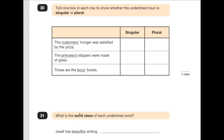Number 30 is asking you to show whether each example is singular or plural. They all use apostrophes. The trick with singular and plural apostrophe use for possession is that if you've got a plural, the apostrophe 9 times out of 10 goes at the end after the S. 'The customers' hunger was satisfied by the pizza' — apostrophe after the S, so that's plural. 'The princess's slippers were made of glass' — apostrophe S, so it's one princess — singular. 'Those are the boys' books' — the apostrophe is at the end after the S, so that is plural.